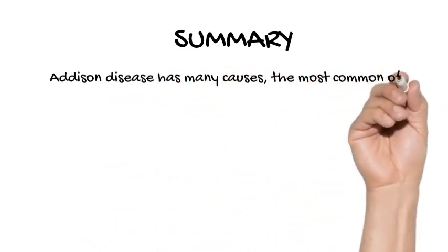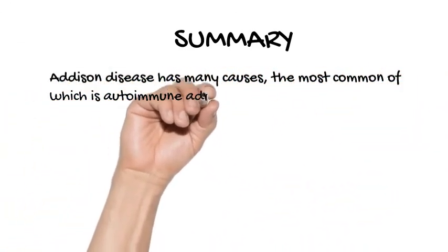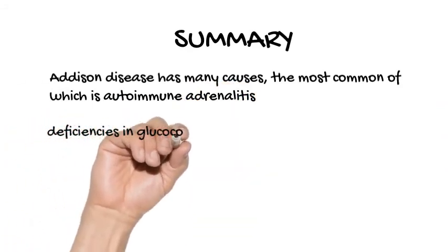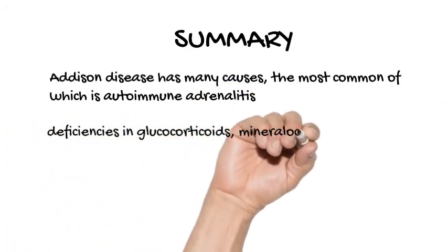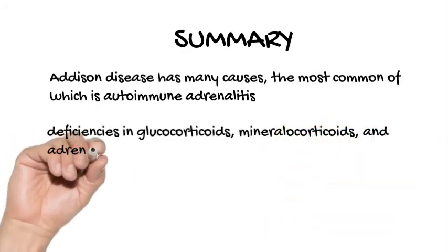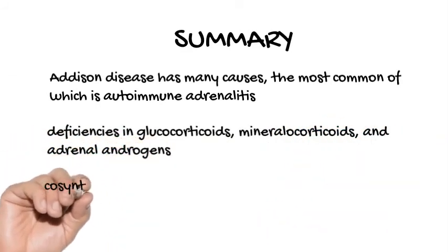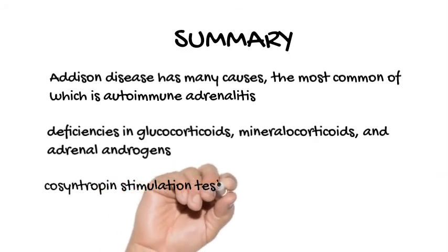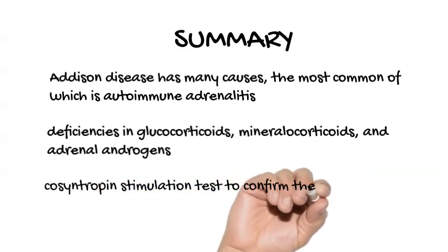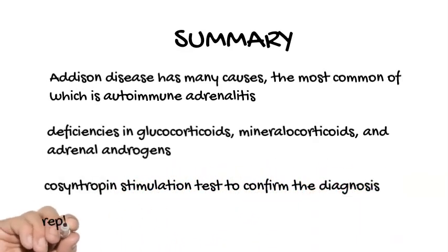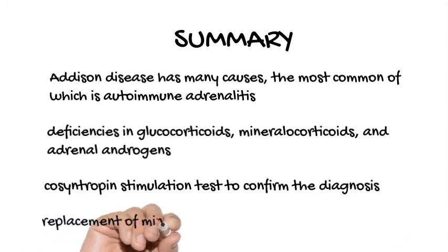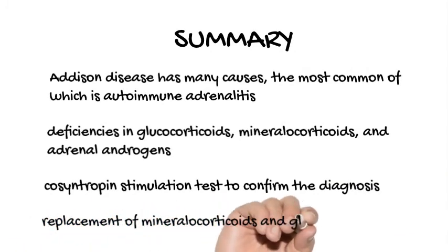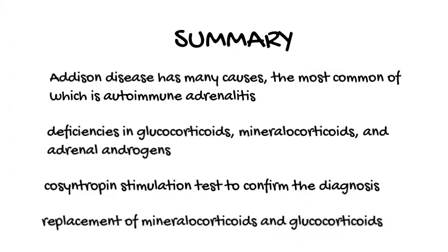Autoimmune adrenalitis results from destruction of the adrenal cortex, which leads to deficiencies in glucocorticoids, mineralocorticoids, and adrenal androgens. When clinically suspected, patients should undergo a cosyntropin stimulation test to confirm the diagnosis. Treatment of primary adrenal insufficiency requires replacement of mineralocorticoids and glucocorticoids.